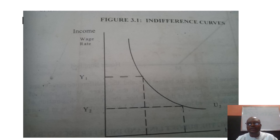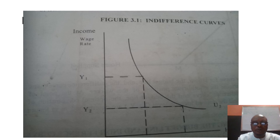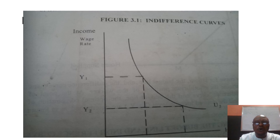As we said earlier, people will tend to supply more hours of work in order to earn more wages. At wage rate Y2, this person supplies OL1 and OL2 hours of work. However, when the wage rate increases, this individual tends to enjoy leisure more than income, and therefore reduces hour supply from OL2 to OL1.